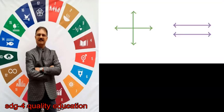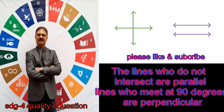The lines who do not intersect are parallel. Lines who meet at 90 degrees are perpendicular.